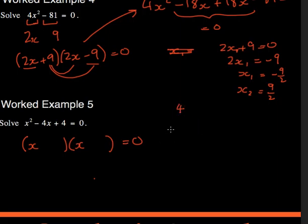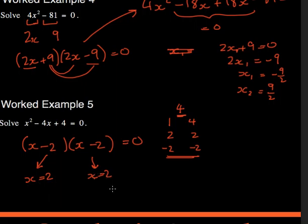So two factors of 4 that add to make minus 4. So I could write 1 and 4, they add to make 5. I could write 2 and 2, they add to make 4. But I could write minus 2 and minus 2, which multiply to make 4, and they add together to make minus 4. So these are my two values I put here. That's going to be minus 2 and that's going to be minus 2 as well. And this would make x equal to 2, and it's the same on this one. So there's no real x1 and x2, they're both the same. So x equals 2 is the only solution for that.